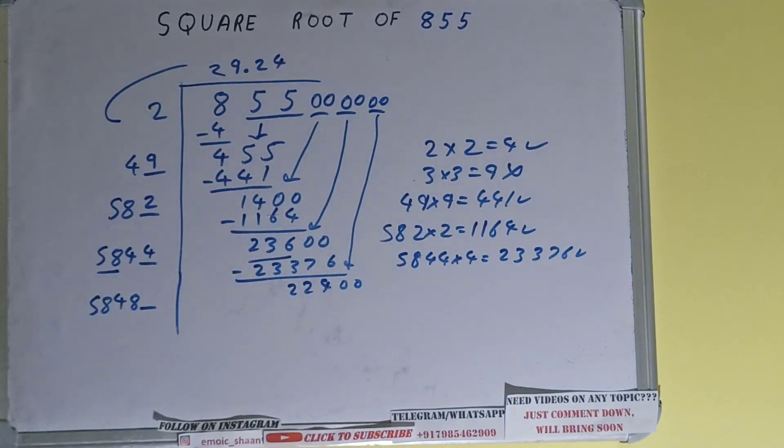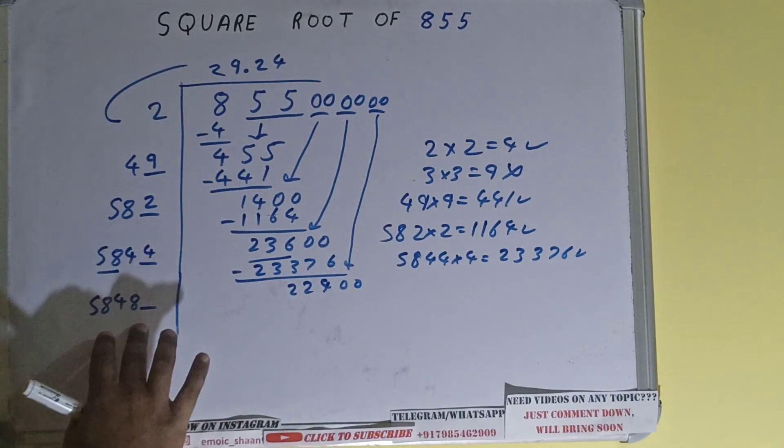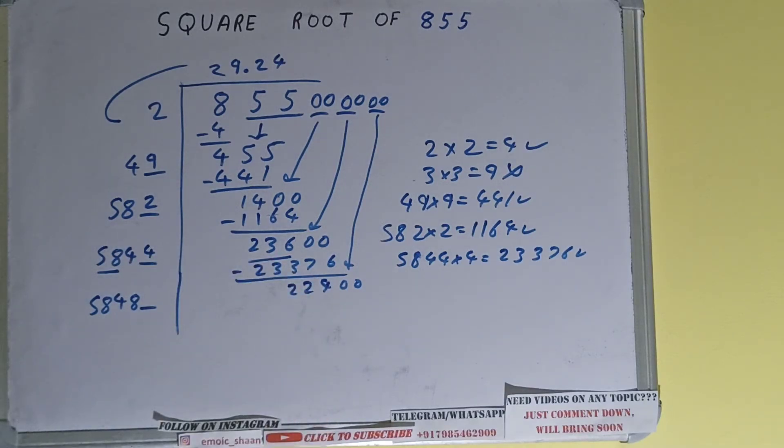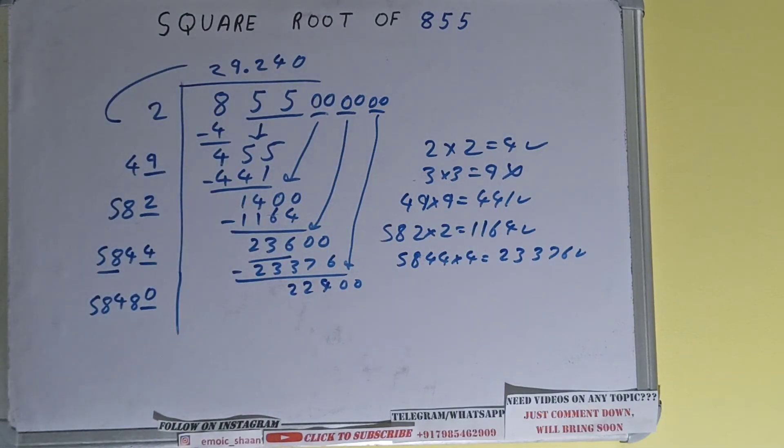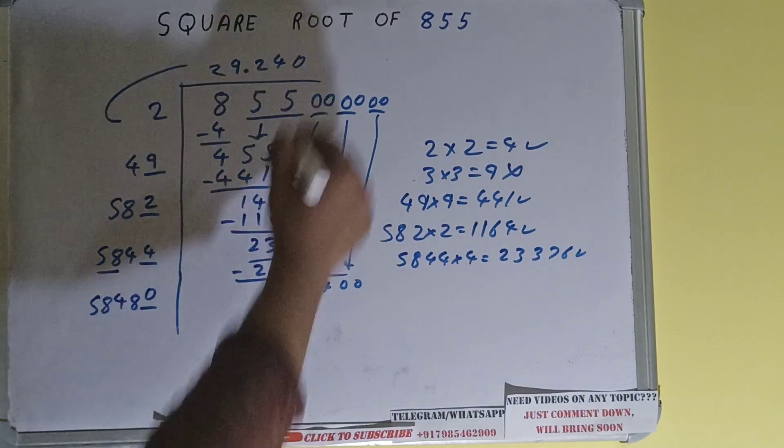Now we cannot use 1 time because we'll get a number greater than 22400. So we'll use zero, but we don't need to calculate because we got the answer correct up to three decimal places.